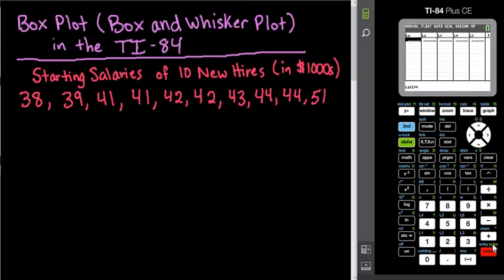And then we're just going to quickly put all of this information into our calculator. So 38, 39, 41, 41. Okay, and we want to make sure that all 10 points are in, and that all of them are correct, because if you put them in incorrectly, obviously it's going to give you the wrong graph.